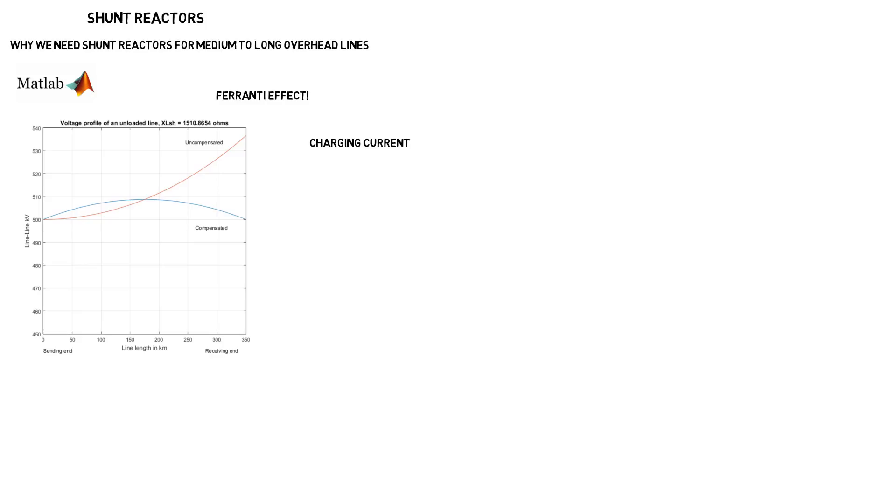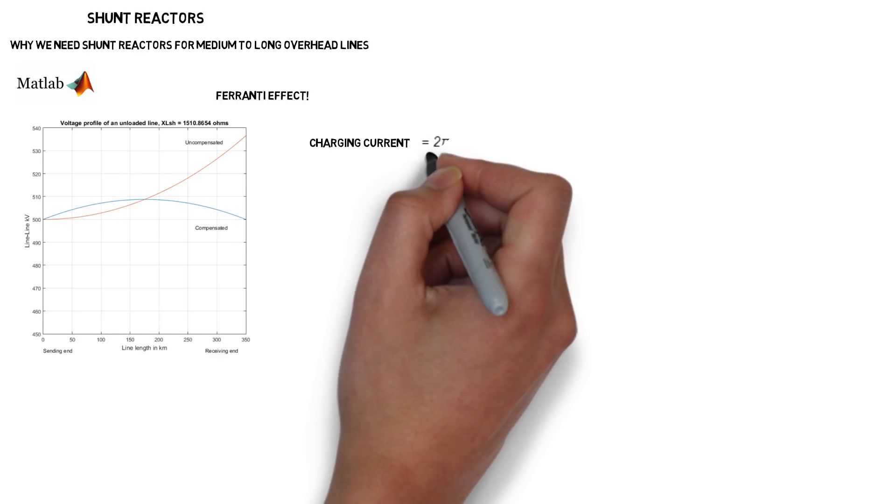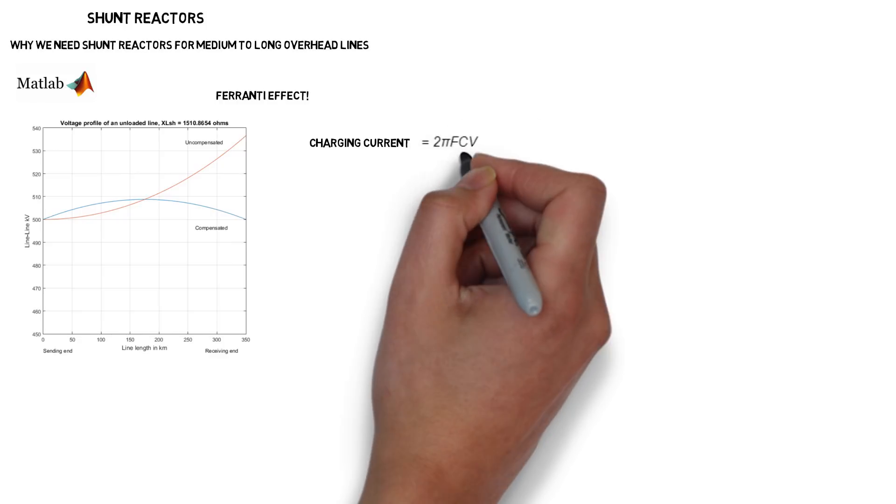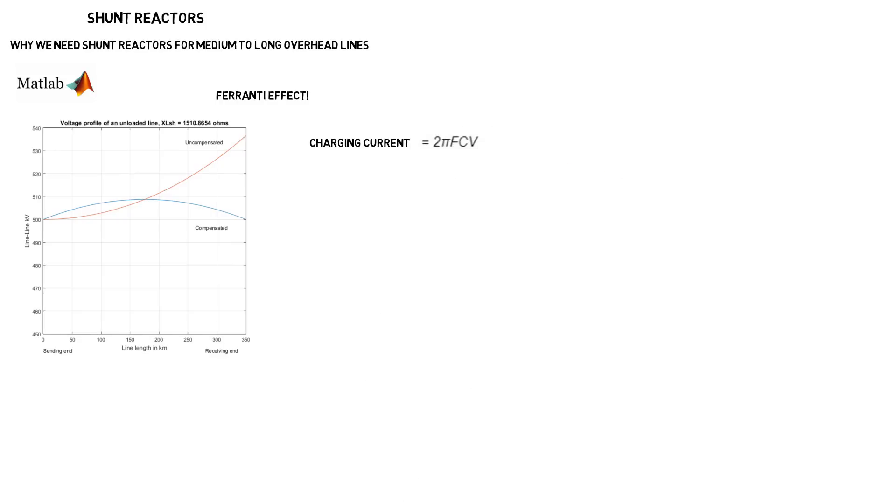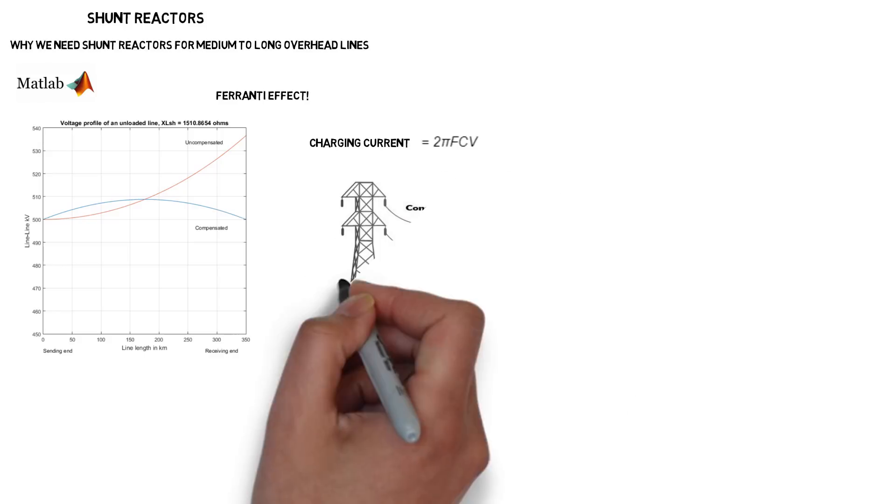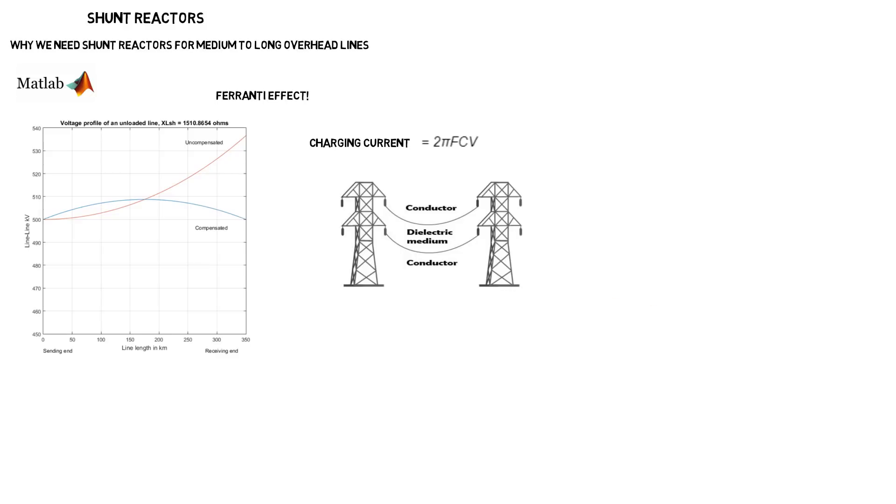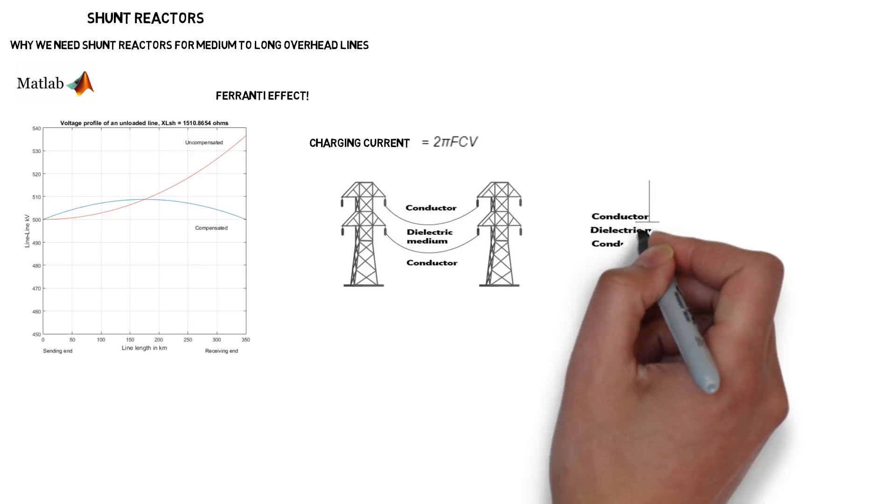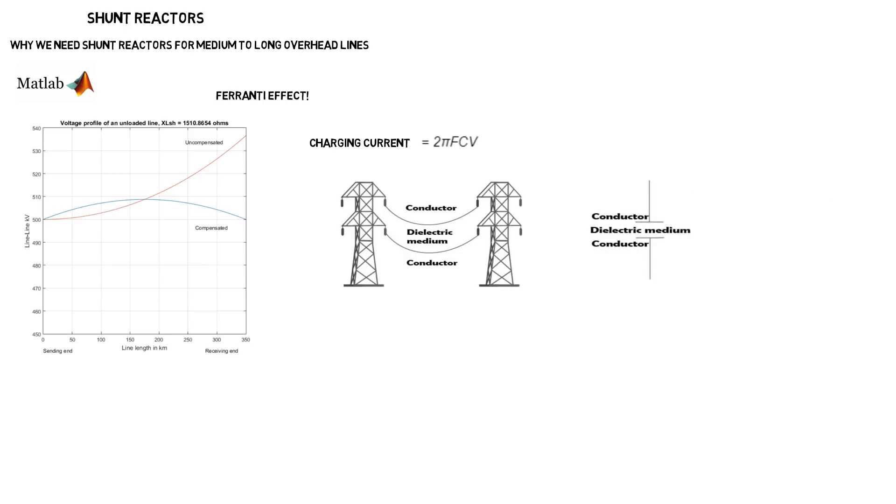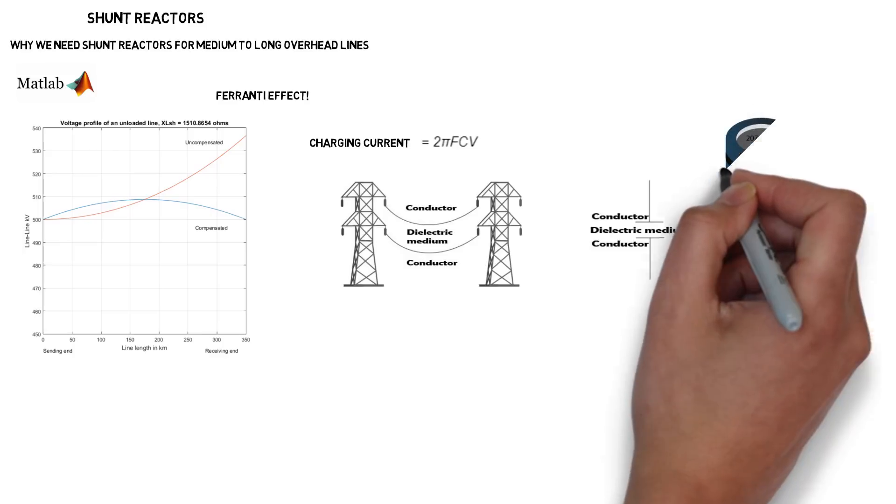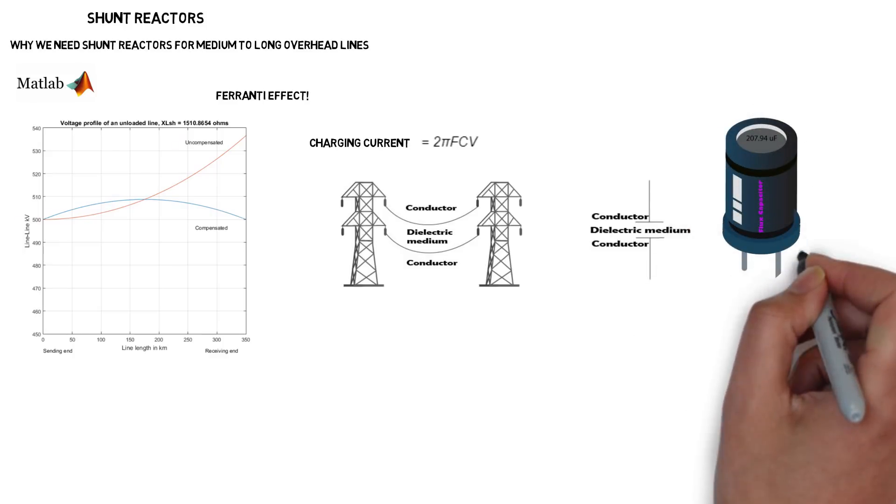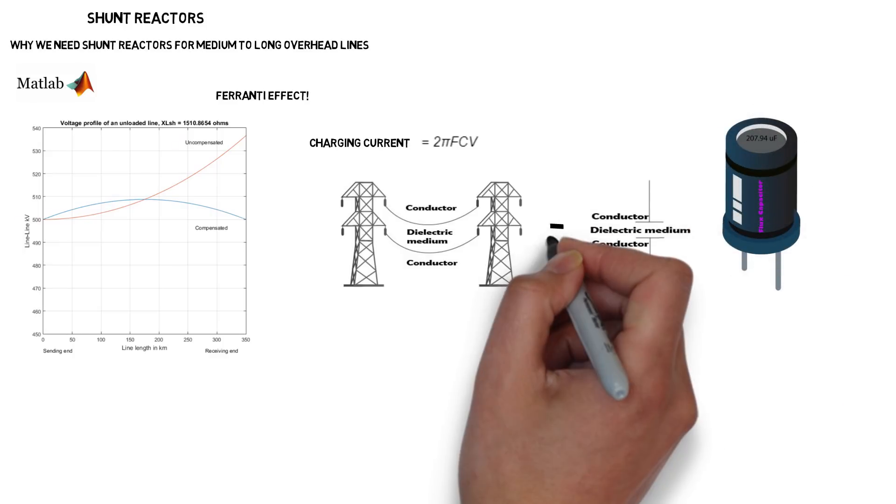The charging current is equal to 2πfCV, where f is the frequency, C is the capacitance and V is the voltage. Thus the Franti effect will be more onerous at higher voltages and frequencies. The capacitance of the line is due to its composition. We have conductors separated by a dielectric medium, another electrical component that has the same composition is a capacitor.